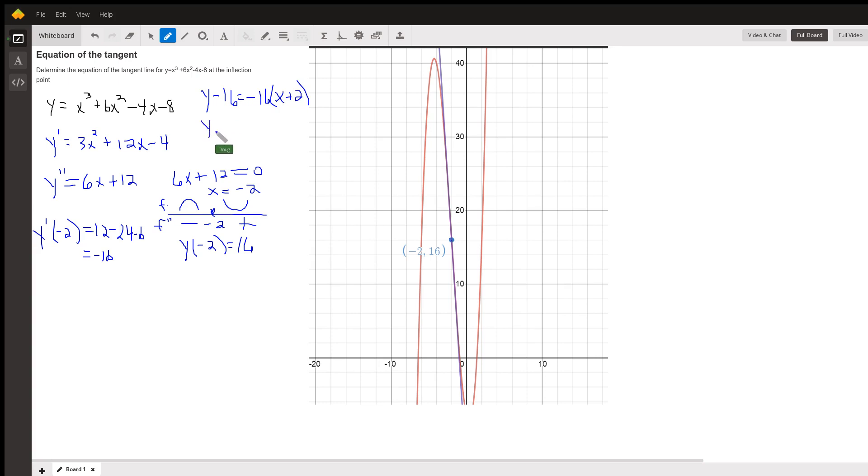If you want to put that in slope intercept form, distribute that minus 16. You get a minus 32. Add 16 to both sides. You get minus 16. So there's the equation of the tangent line at this point of inflection.